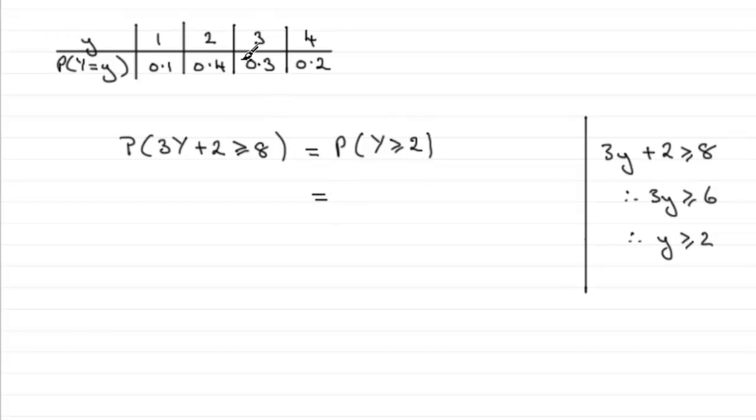That's going to be the probability of 2 plus probability of 3 plus the probability of 4. In other words, 0.4 plus 0.3 plus 0.2. If you work that out, you've got 0.9.